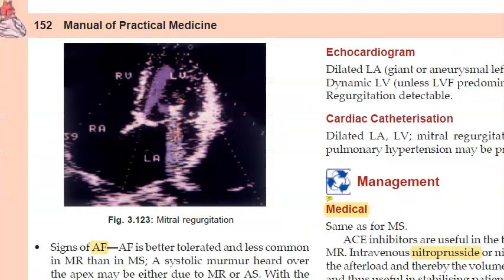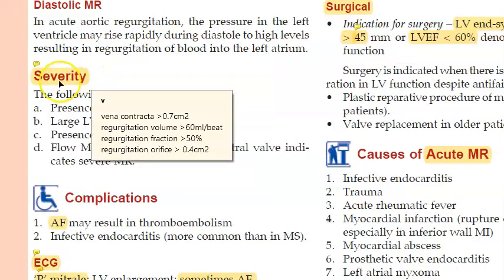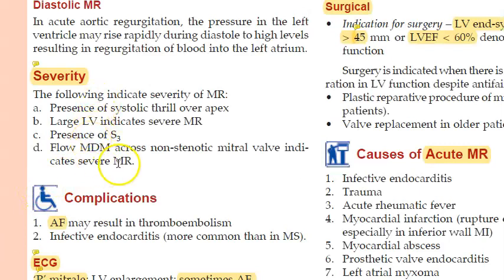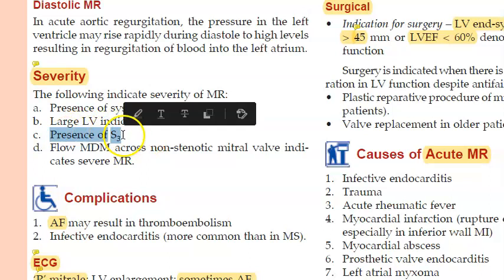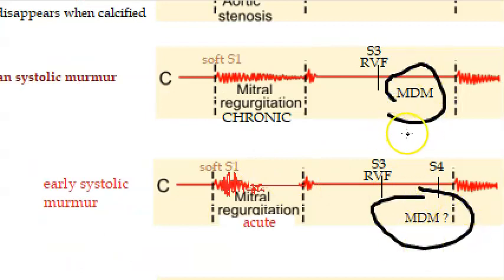Mitral regurgitation severity is classified based on vena contracta — the area of the regurgitant jet — along with regurgitation volume, fraction, and orifice size. The presence of S3 also indicates severity. In late stages of severe MR, a mid-diastolic murmur can also be present.